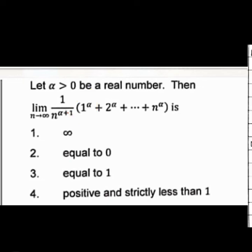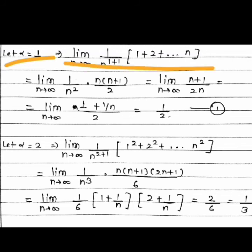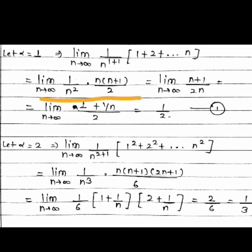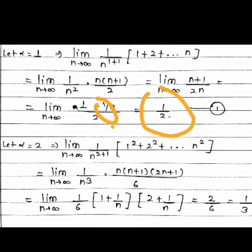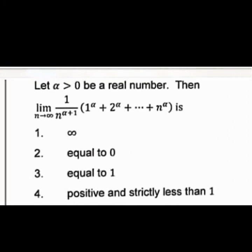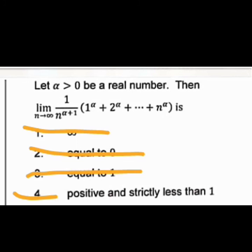Let's first try α = 1. Then the sum becomes (1 + 2 + ... + n) = n(n+1)/2. So the expression becomes (1/n²) × n(n+1)/2 = (n+1)/(2n). Taking the limit as n → ∞: limit of (1 + 1/n)/2 = 1/2. So at α = 1, the value is 1/2, which is positive and strictly less than 1. Option A (infinite) and option B (equals 0) and option C (equals 1) are discarded. Option D (positive and strictly less than 1) matches.